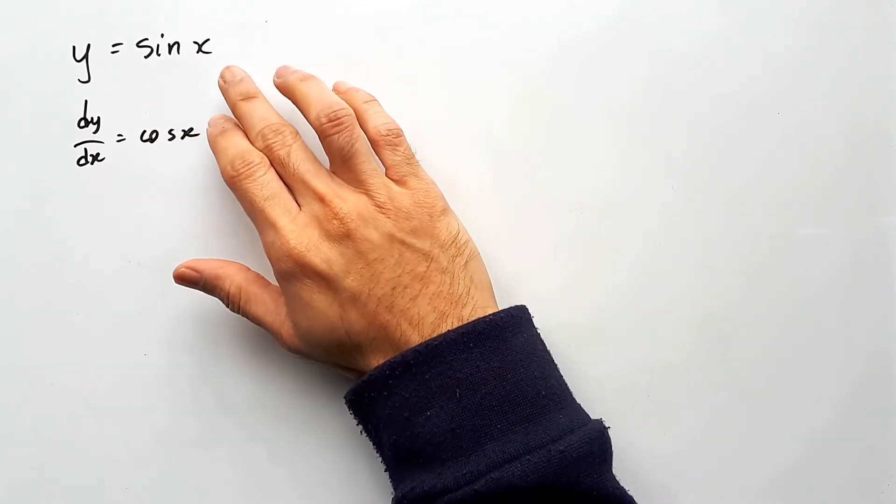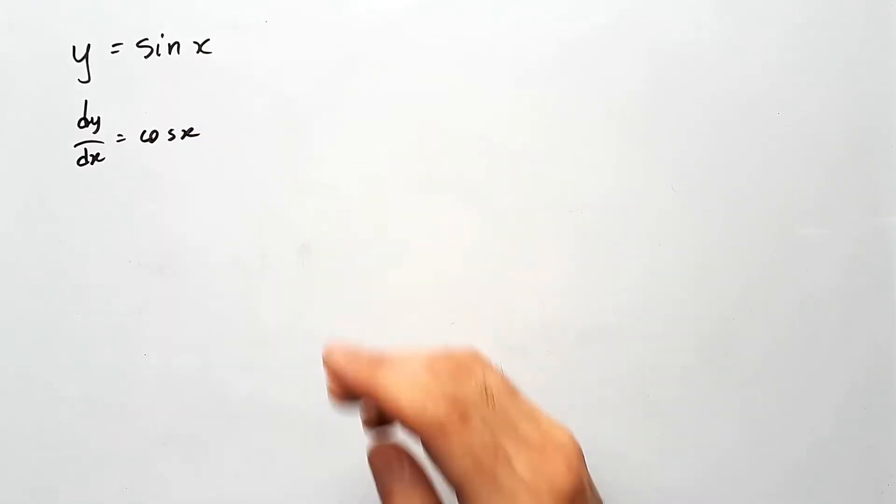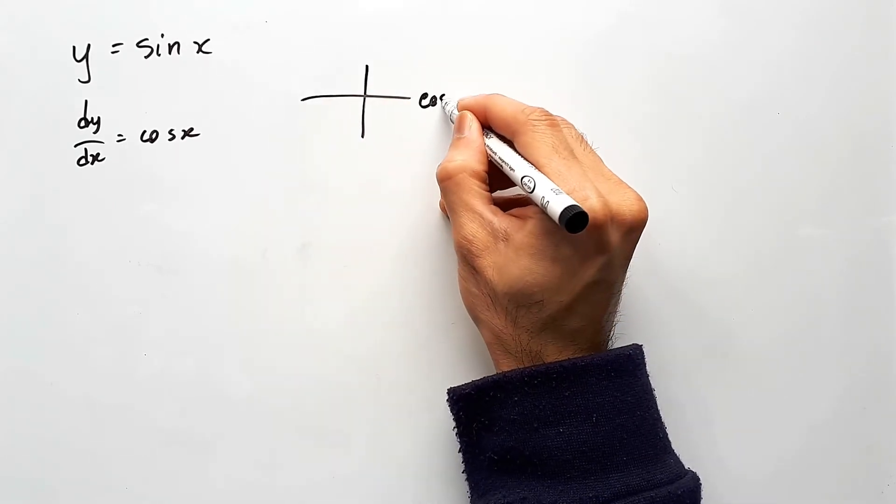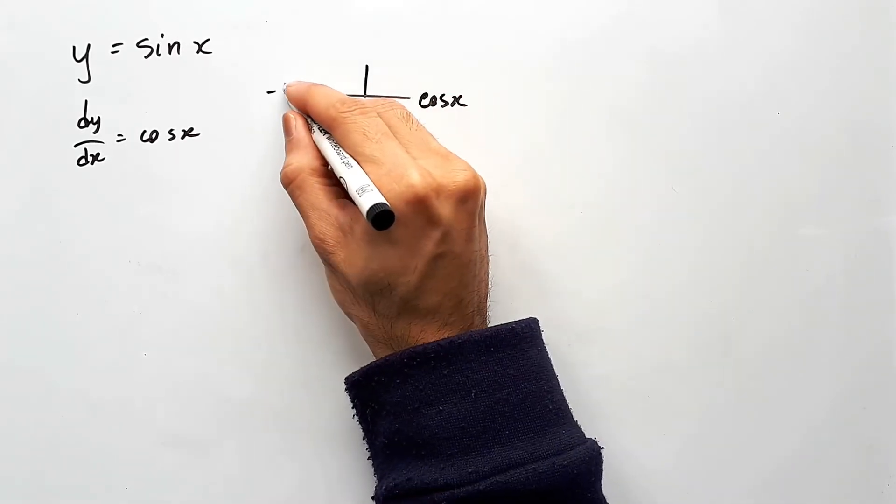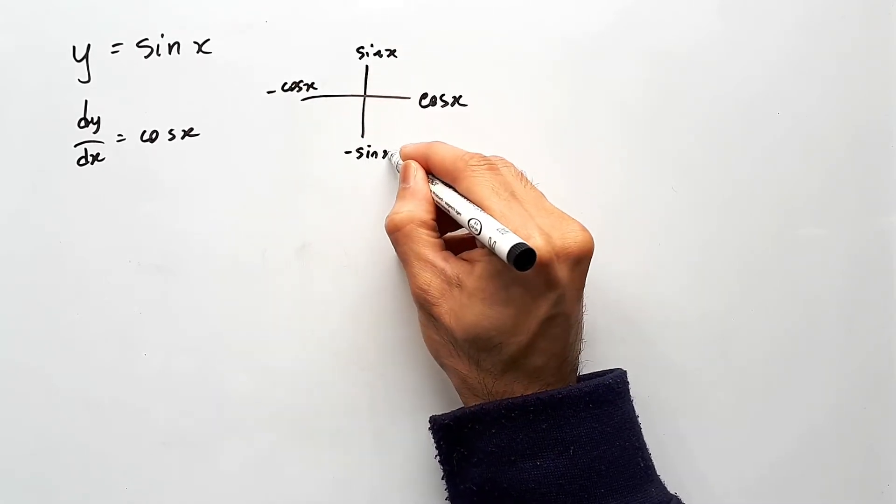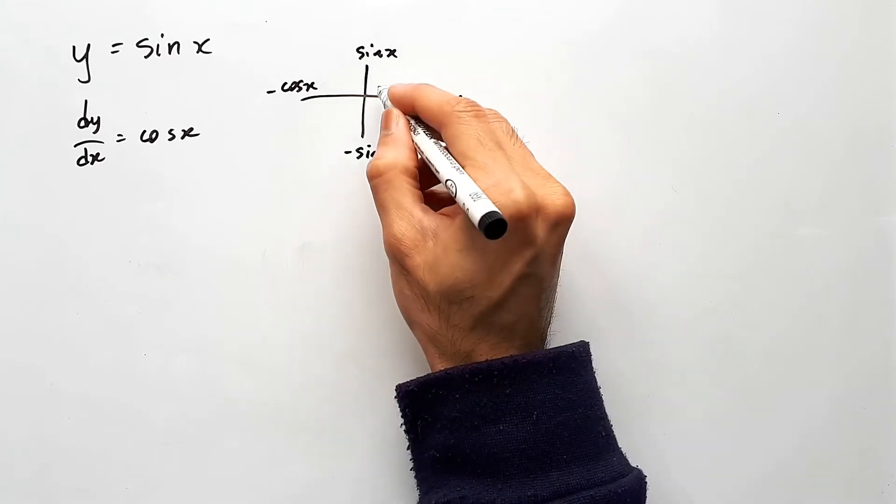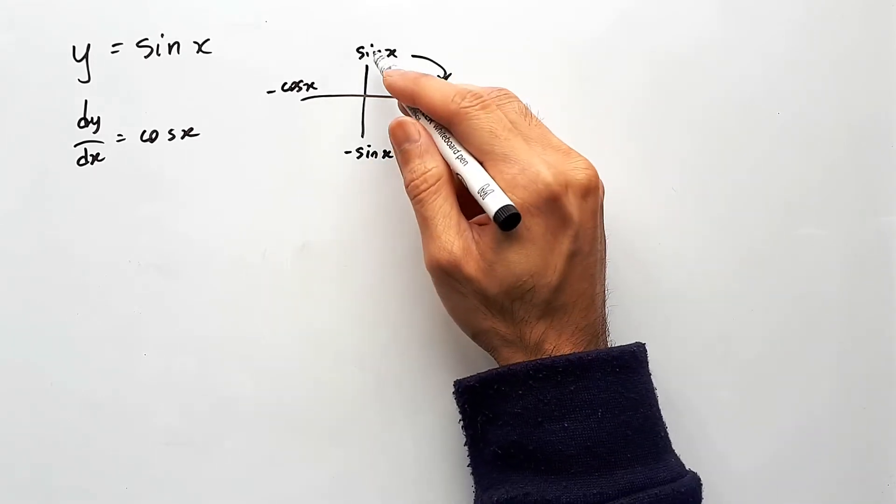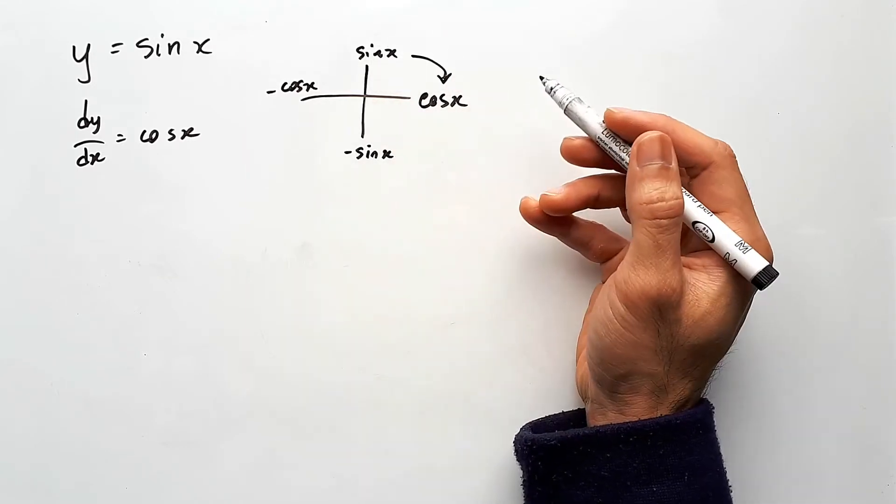If you're having trouble remembering how this works or what it differentiates to, just think about the unit circle. We're given that cos x is on the right and the negative cos x is on the left. Sine x would be on top, negative sine x on the bottom. If you were to differentiate sine of x, it would become cos of x. So it's as if you're rotating backwards along the unit circle.